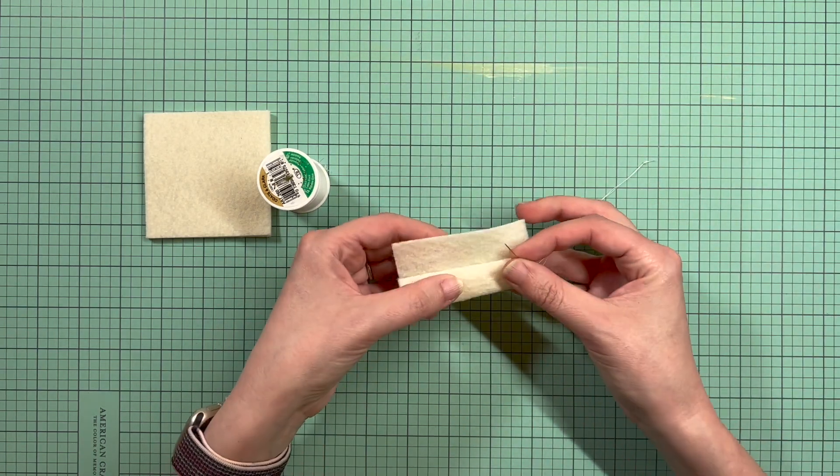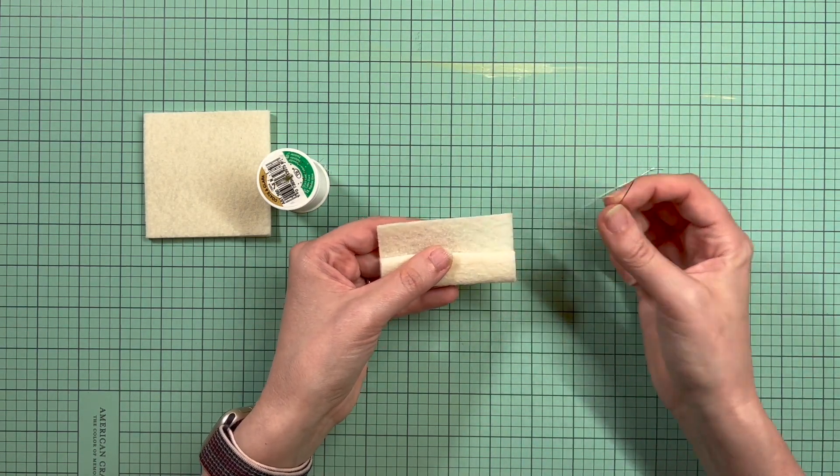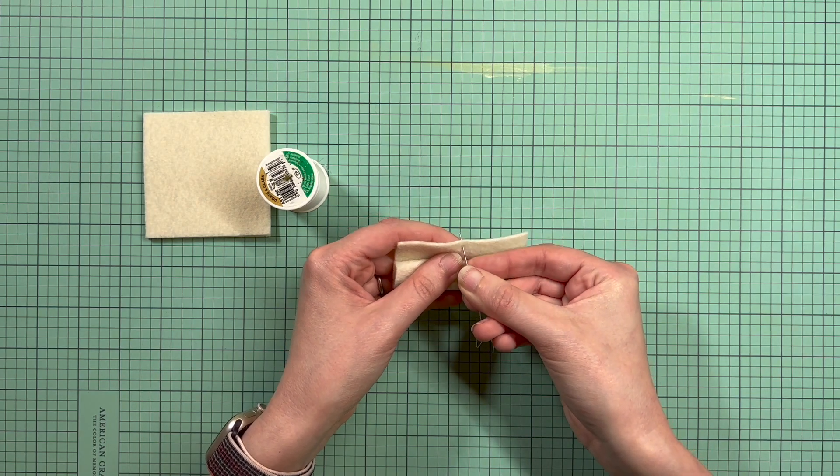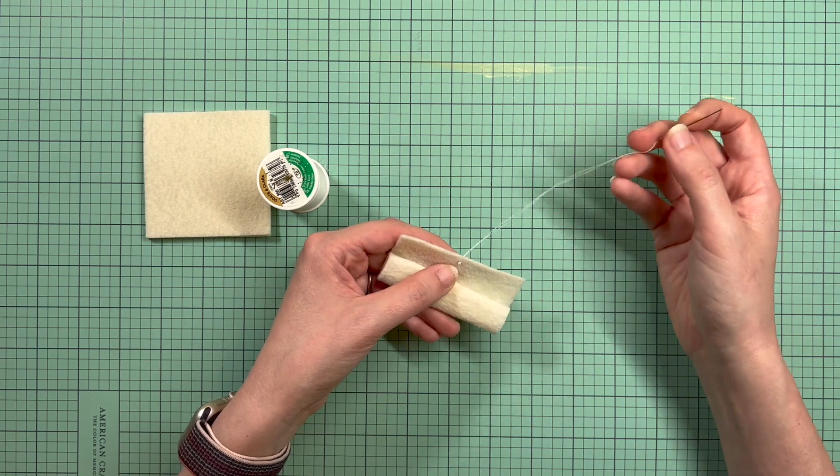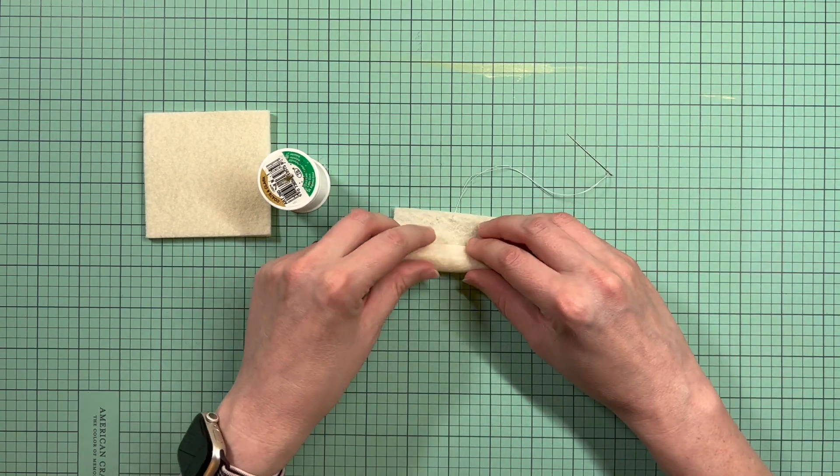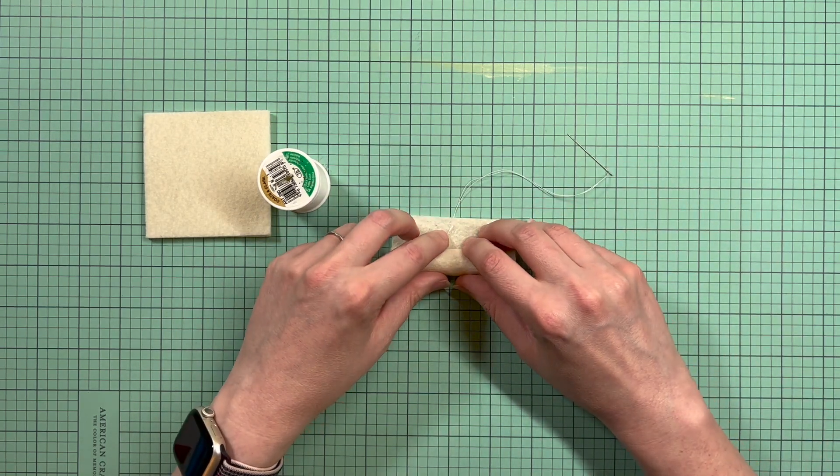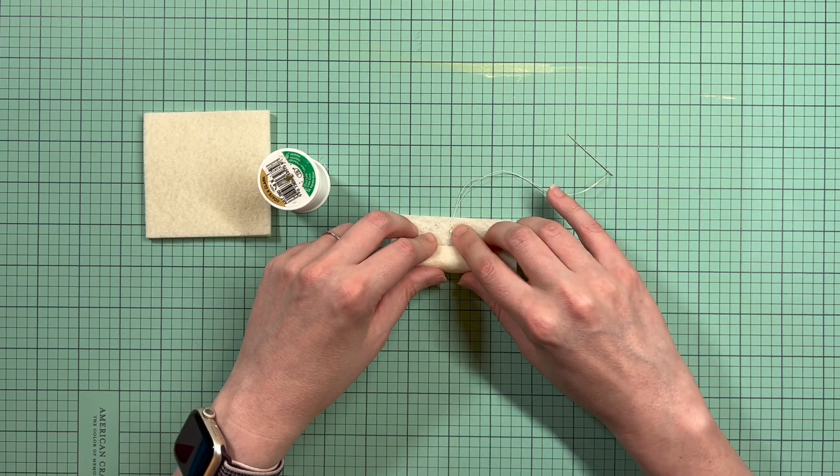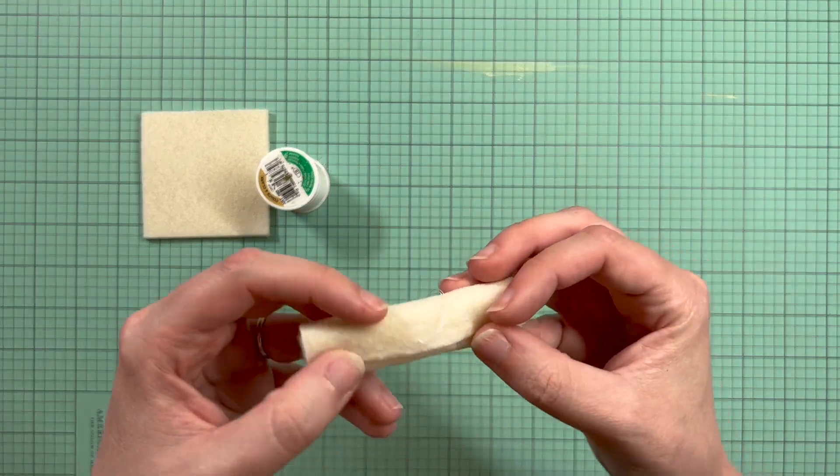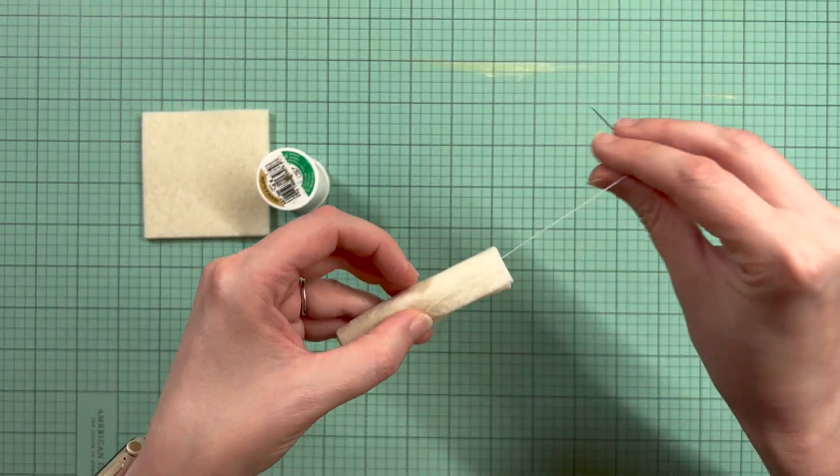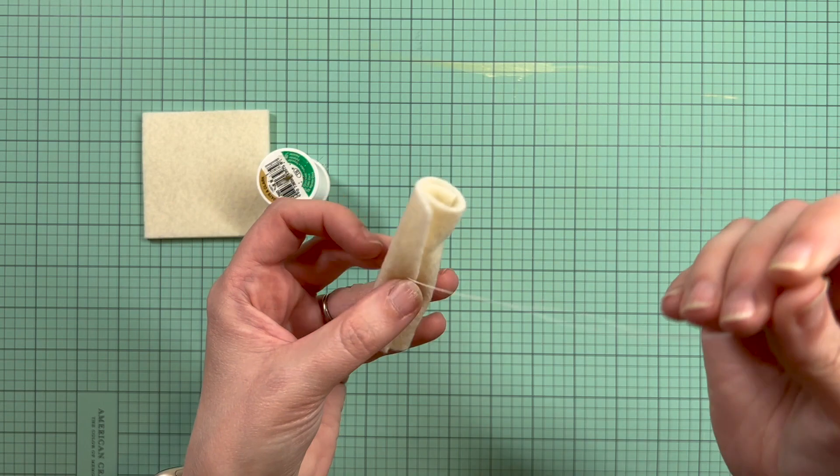So what I'm going to do before I finish rolling it up is put my needle in going from the inside to the out, just in the middle of my felt, and then I'll finish rolling. And I'm going to try and hide this end down here. And I've just got a knot in the end of my thread. And so there is my rolled up diploma, super simple with my thread coming out.